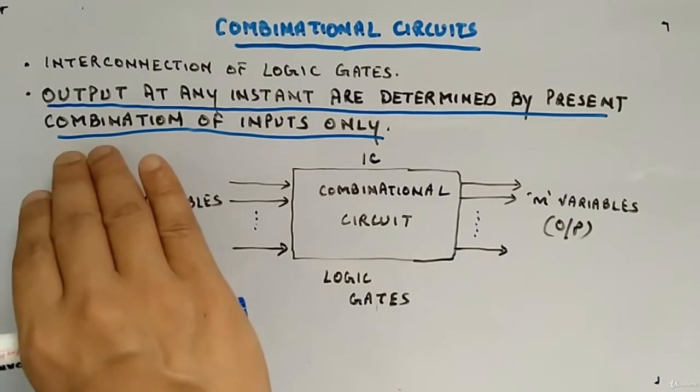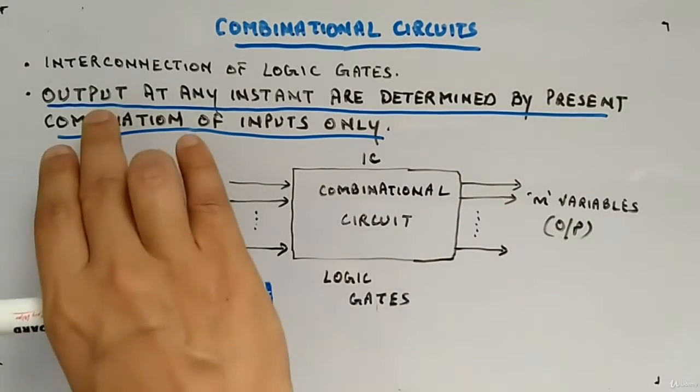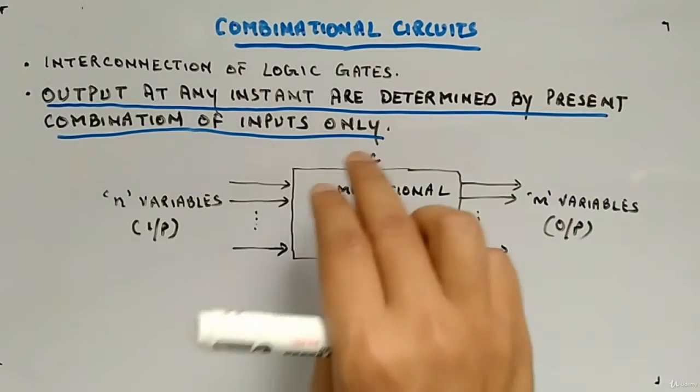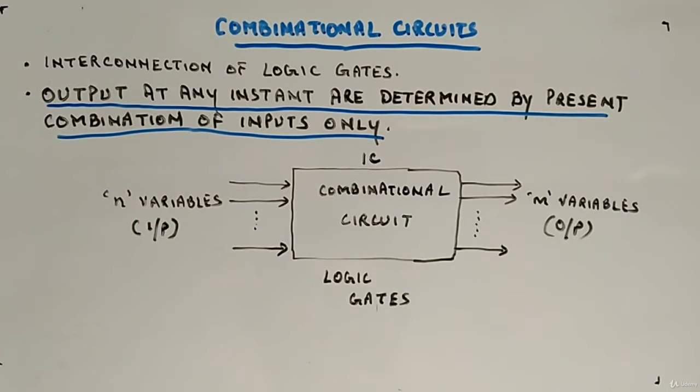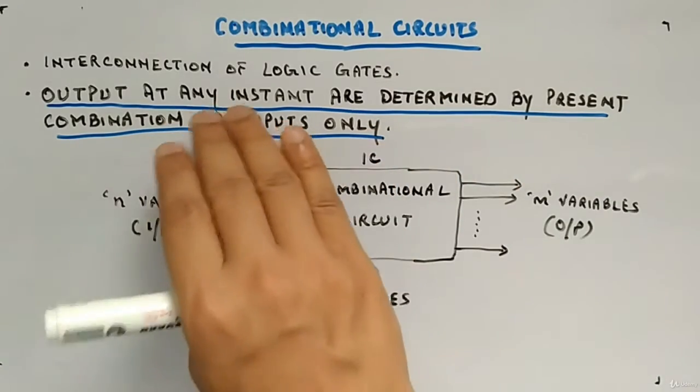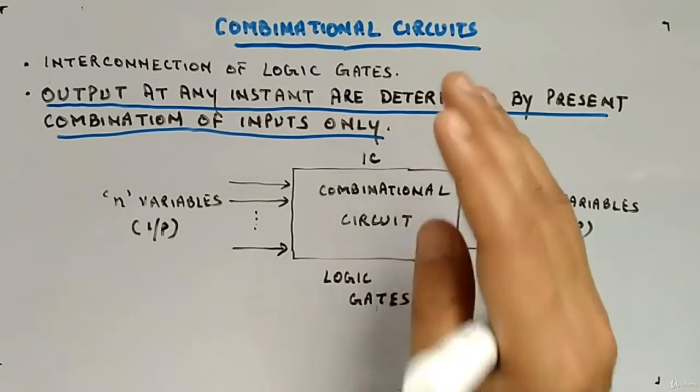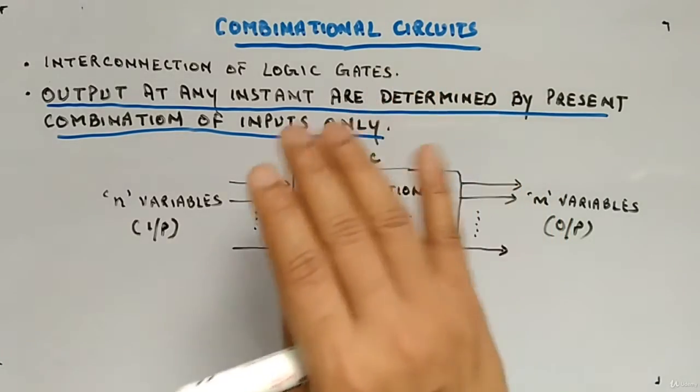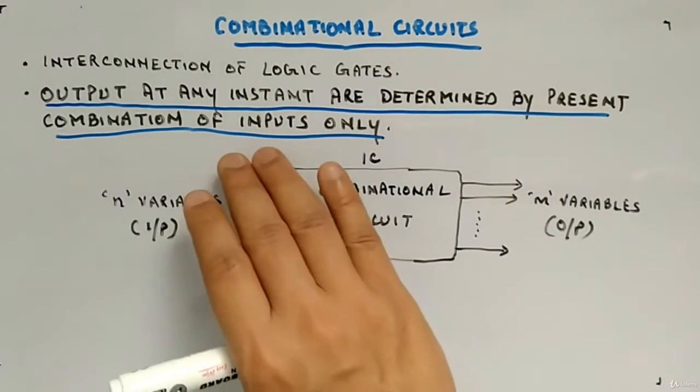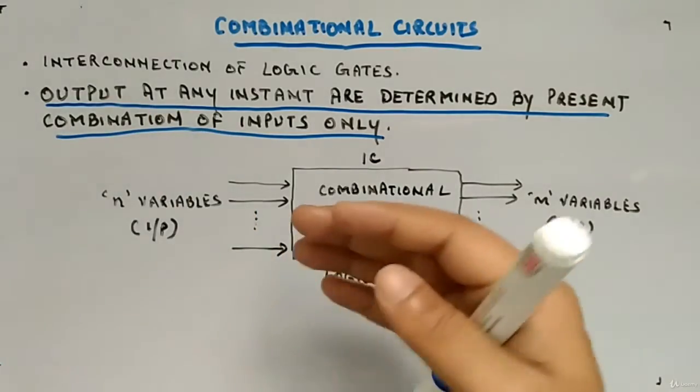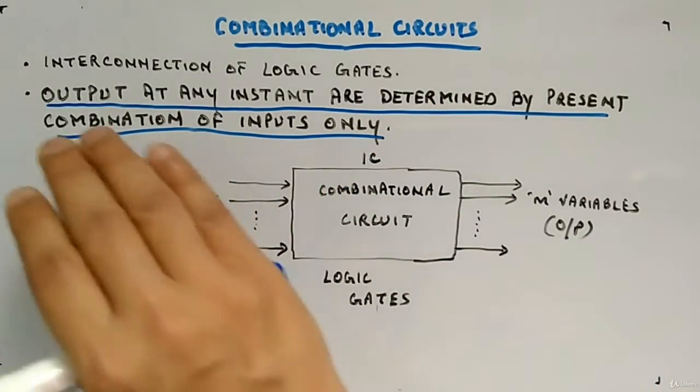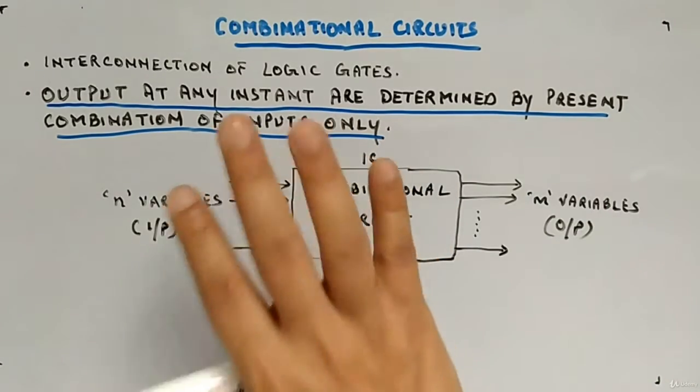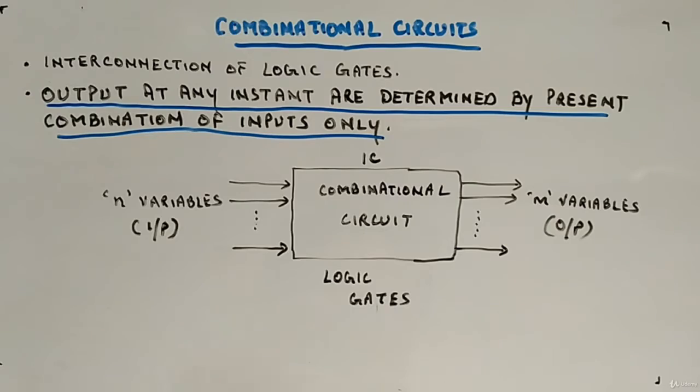Then the main thing you have to remember is this thing. Output at any instant are determined by present combination of inputs only. At any time, time is most important because it's a static type of circuit. It doesn't depend upon time. It depends only on the present input, whatever the present input is. Output at any instant is determined by the present input combination only.